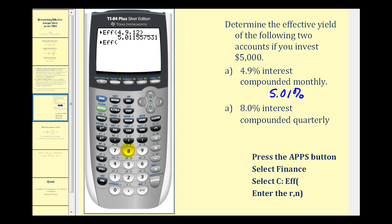Interest rate is 8 percent, comma. This account is compounded quarterly and there are four quarters in one year, so N is four. Close parenthesis. Press enter. Our effective annual yield is approximately 8.24 percent.